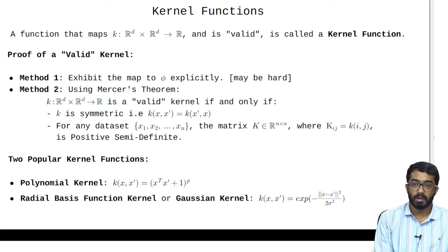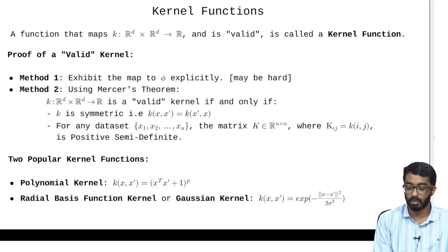Two popular kernel functions are the polynomial kernel k(x, x') which is equal to (x transpose x' plus 1) raised to p. And the second famous kernel function is the radial basis kernel function which is given by k(x, x') equals exponential of minus norm of x minus x' squared divided by sigma squared.